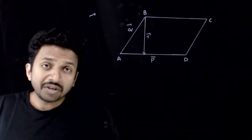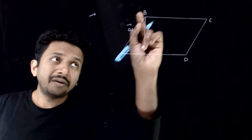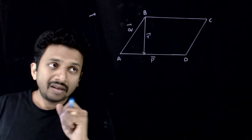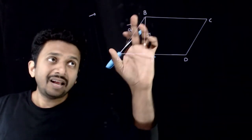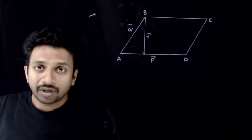Welcome students. In this question, you are given that you have a parallelogram ABCD and AD vector is P bar and AB vector is Q bar.